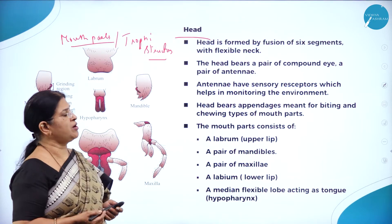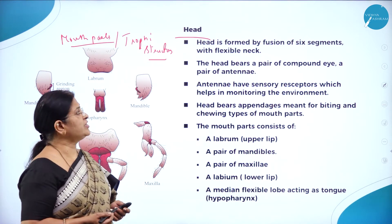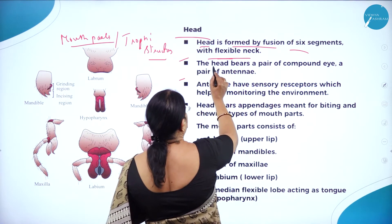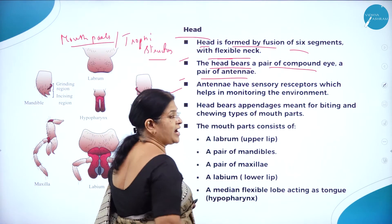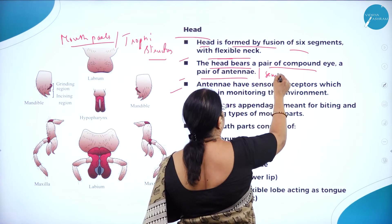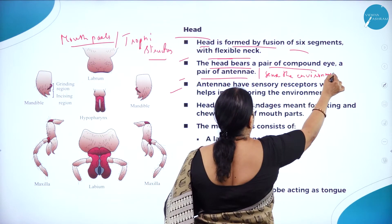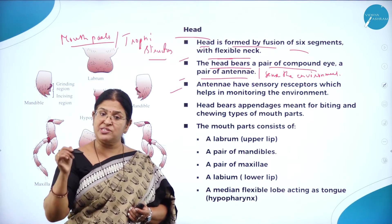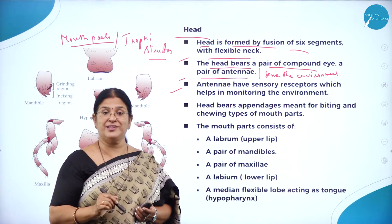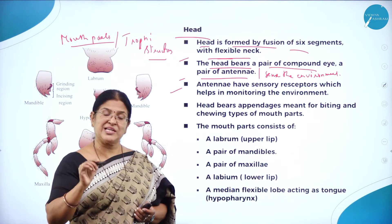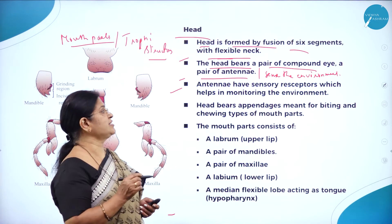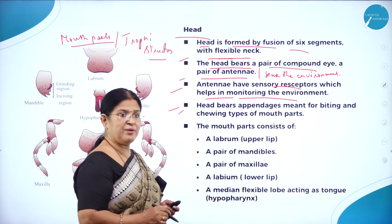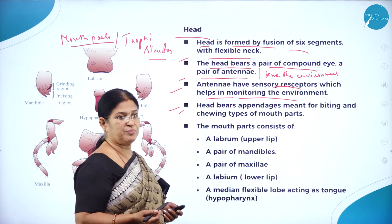The head is formed by the fusion of six segments of the body with a flexible neck. It bears a pair of compound eyes and a pair of antennae. Antennae have sensory receptors that help in monitoring the environment — that is why a cockroach senses and runs away when you approach, and can detect food items. Hence antennae are important sensory organs.